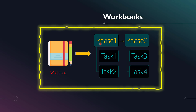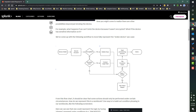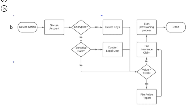This lets you define a well-structured response that is fully or semi-automated. For example, when a device is stolen, a workbook could define steps like: secure the account, delete encryption keys if encrypted, take action on sensitive data if not encrypted, file a police report, file an insurance claim. Some steps can be fully automated using Phantom playbooks.